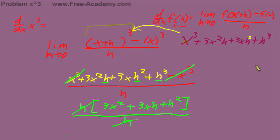So now our limit as h goes to 0 is 3x² + 3xh + h². Now we'll put in 0 for our h's: 3x² + 3x(0) + 0².